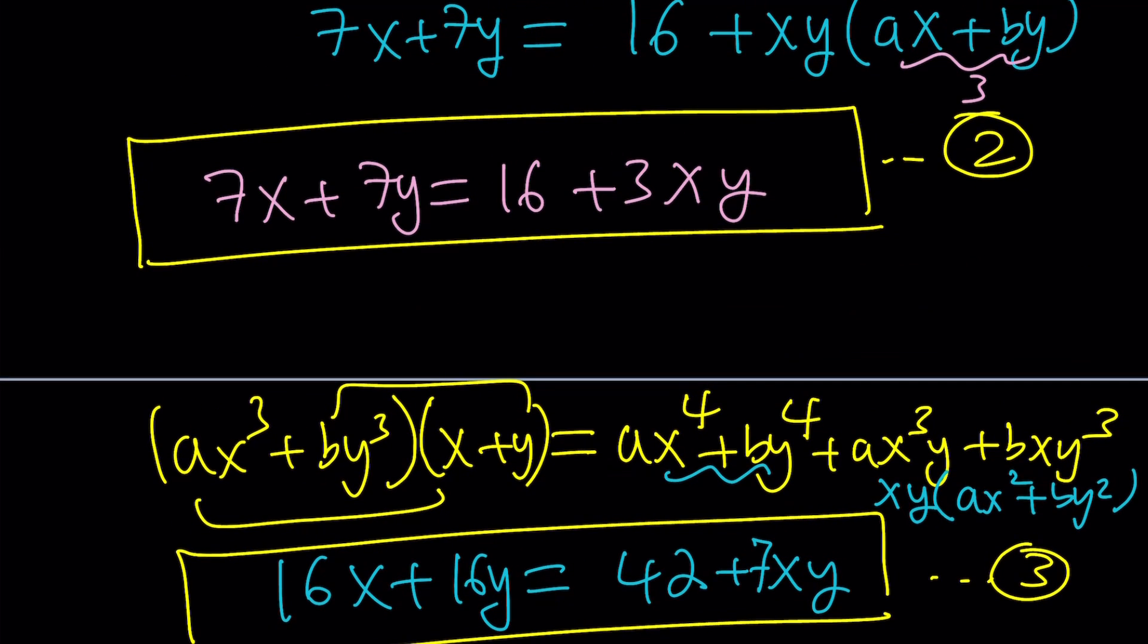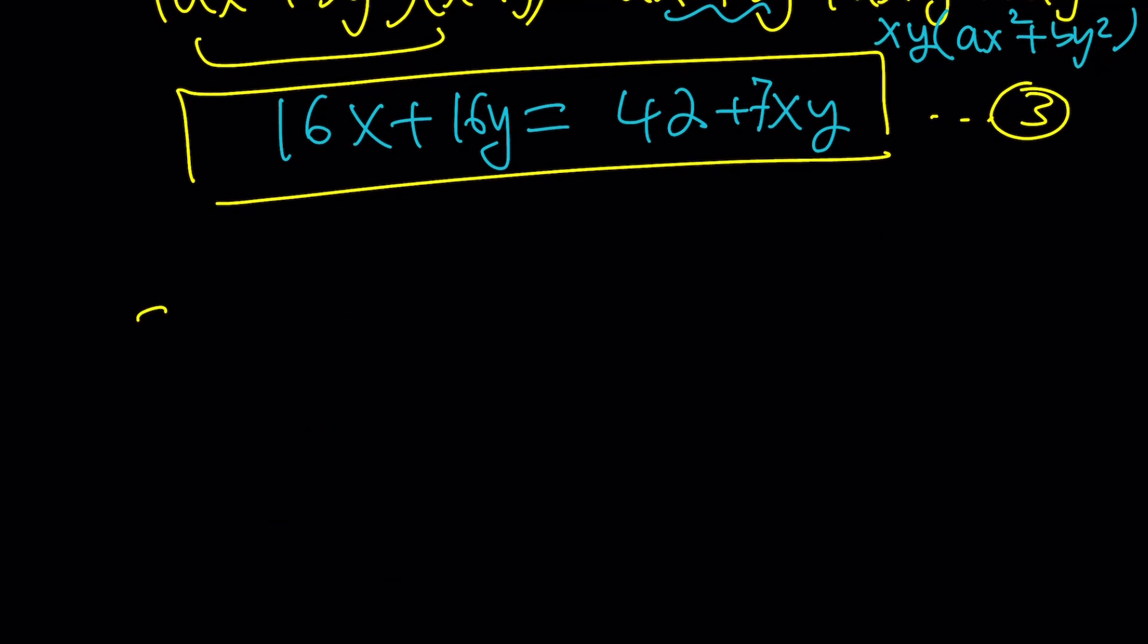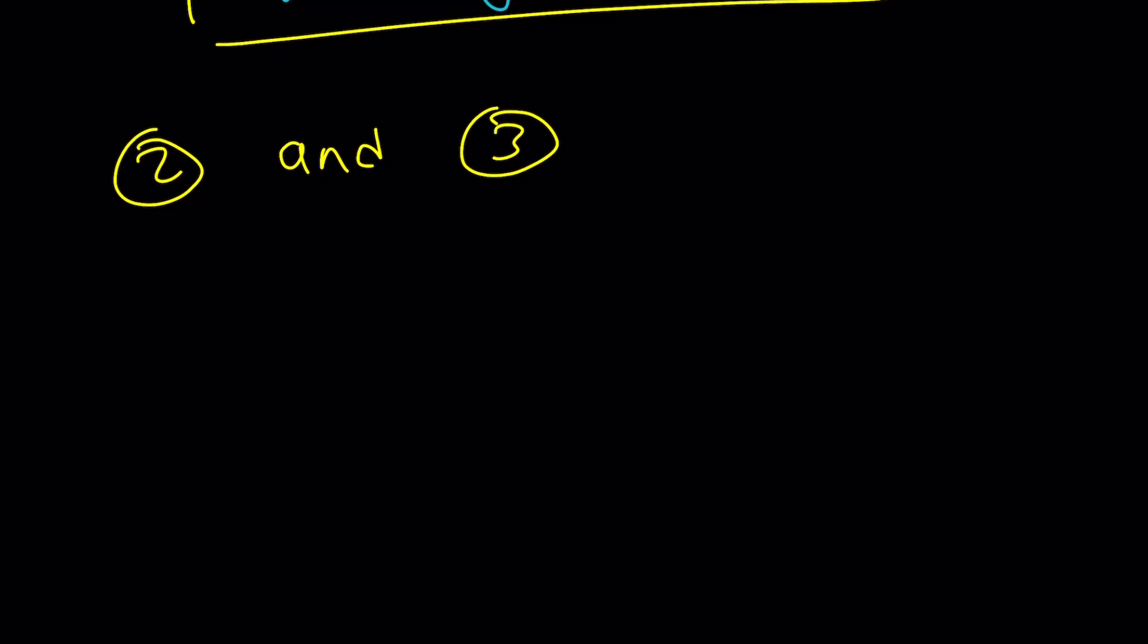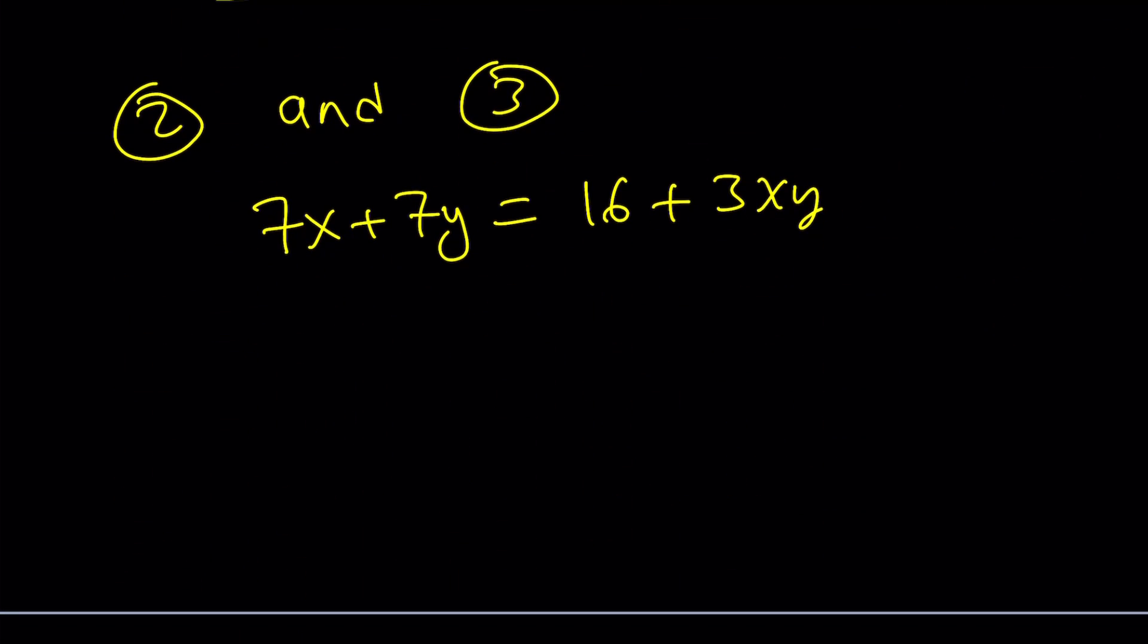Now, we are going to take number 2 and number 3 together. Why? Because we only have two variables. So, 2 and 3. That's why numbering the equations is very helpful. Now, if you go ahead and write down the equations, the second and the third equations together, you get the following. 7x plus 7y equals 16 plus 3xy, right? And the third one is 16x plus 16y is equal to 42 plus 7xy. Awesome.